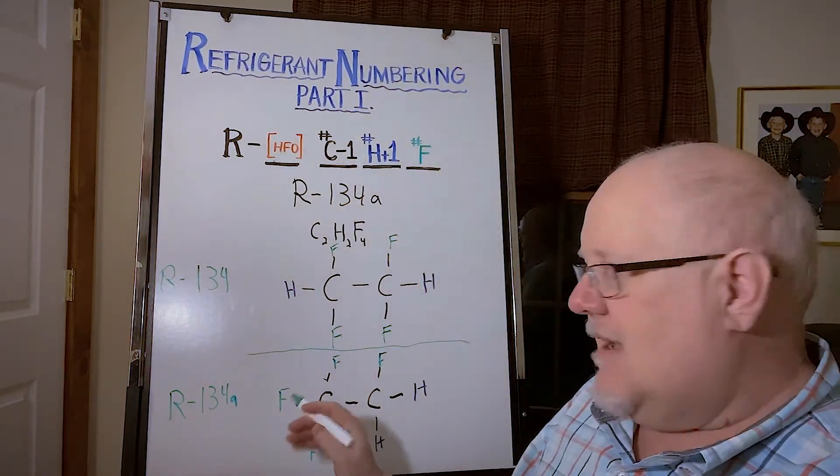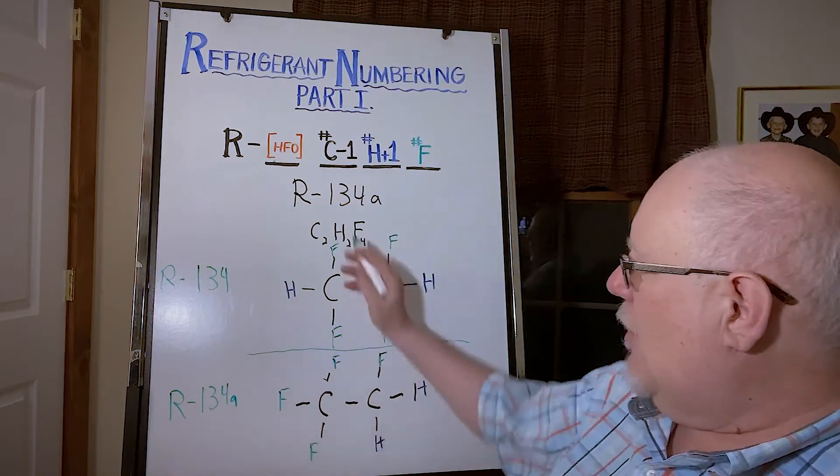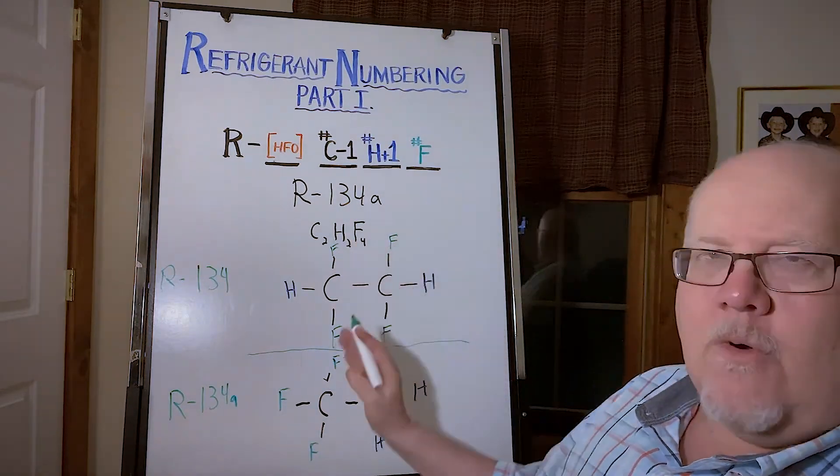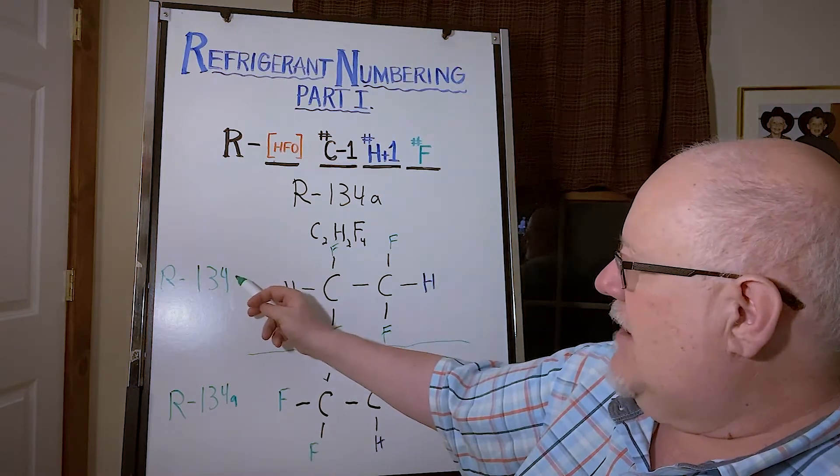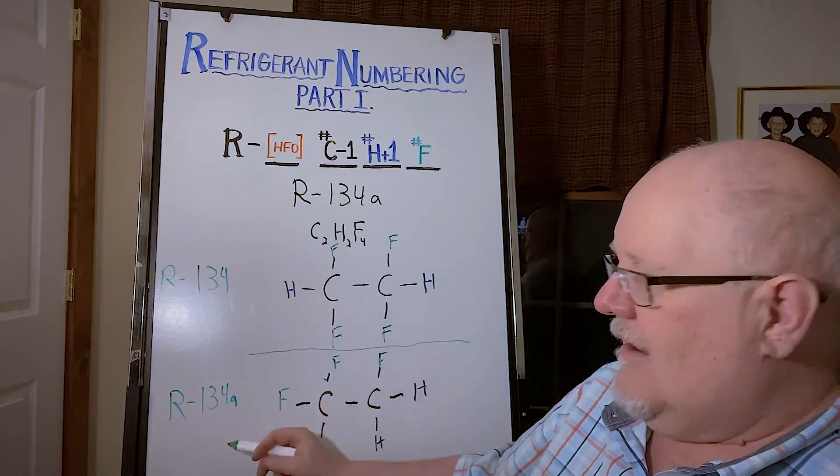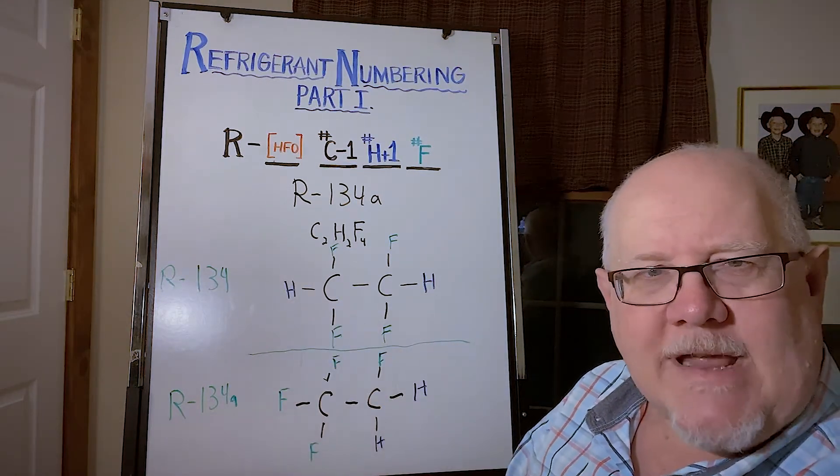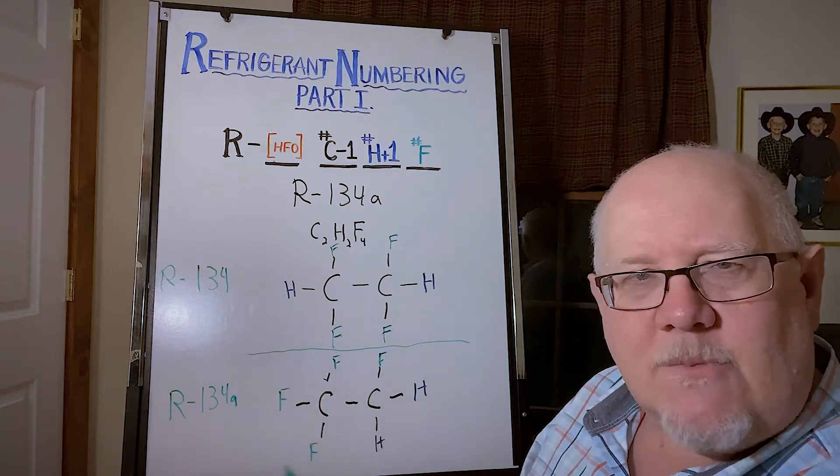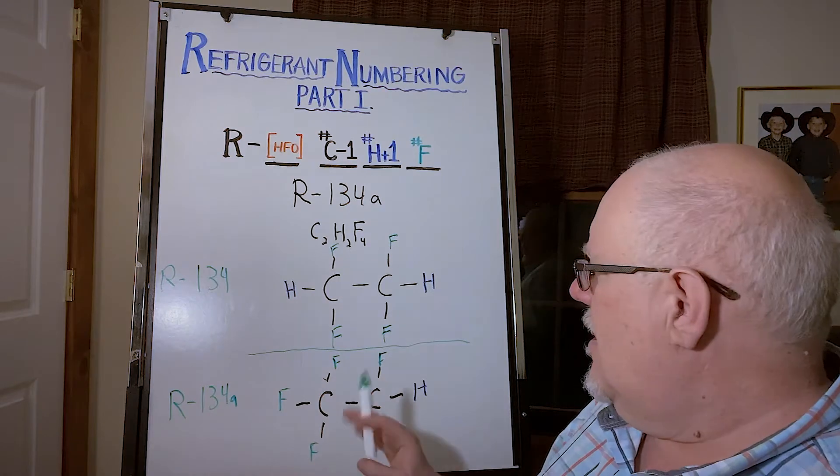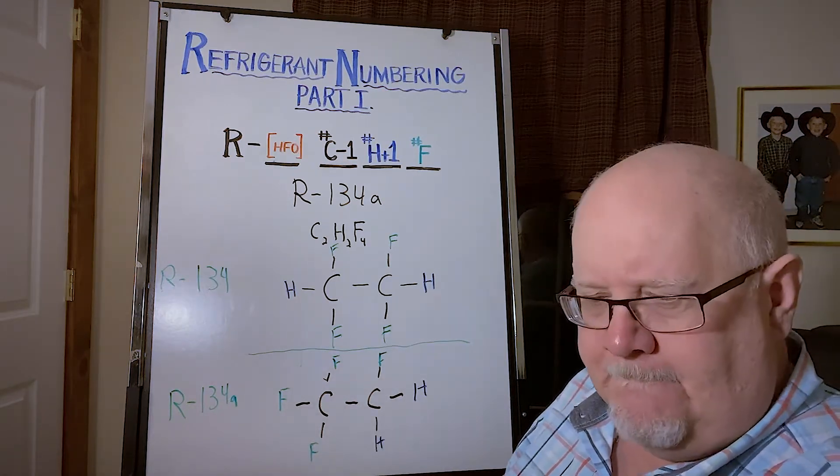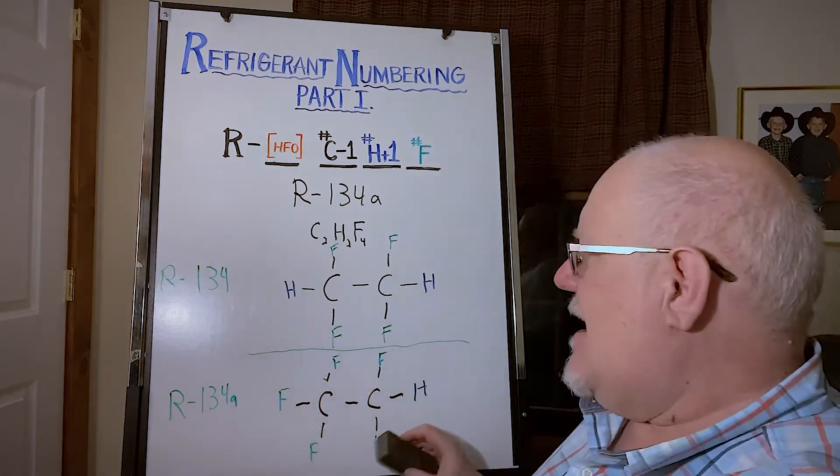So the way the system works is that gets the nominal number, so this would be known as R-134. And then another arrangement with the same formula but a slightly different arrangement is going to get the lowercase 'a' designation. They're both C2H2F4, different isomers or different arrangements, least to most symmetrical going down. If there was another way to arrange these that was even more unbalanced or more unsymmetrical, it would be 134b. In this case that's not possible, but that's where we're at.